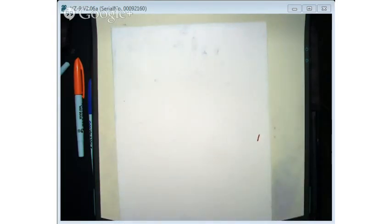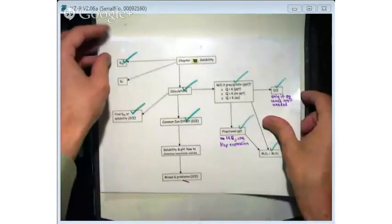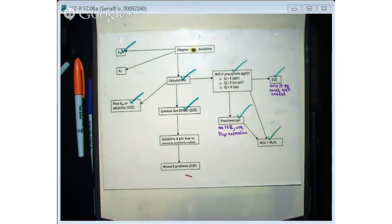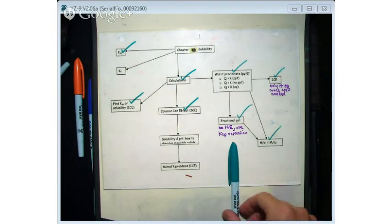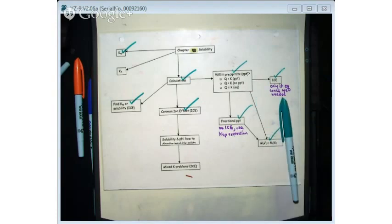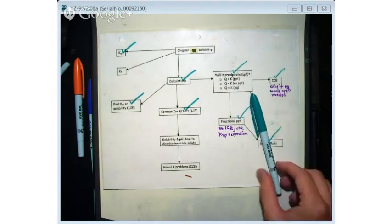As far as flowchart, we're going to do this bottom part here in the KF. Just to clarify one more time, fractional precipitation - usually it would be rare to use an ice table. You're going to use a KSP expression. For ice and the will it precipitate, you're going to use Q. Sometimes you'll use the ice like we did today if they ask you for equilibrium concentrations. If they ask you for equilibrium concentrations, you do. If not, for a will it precipitate problem, you just need Q.